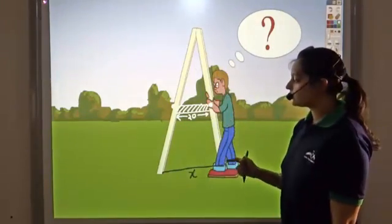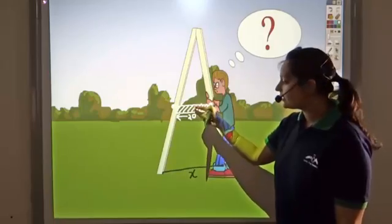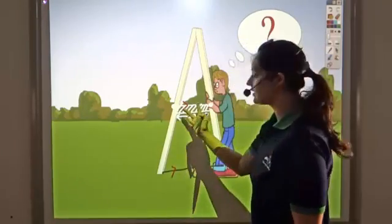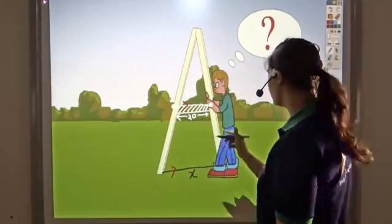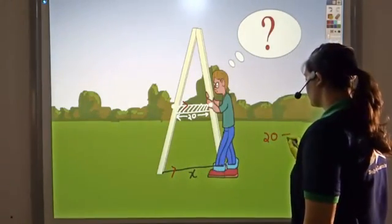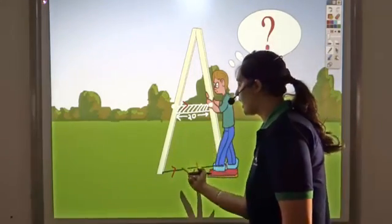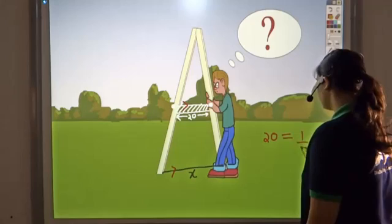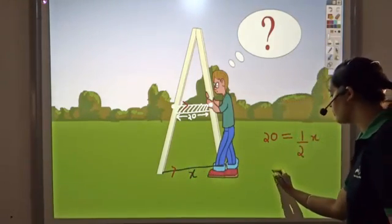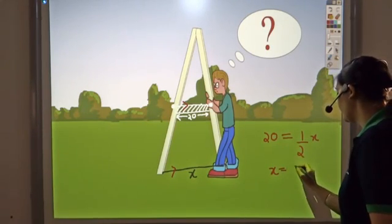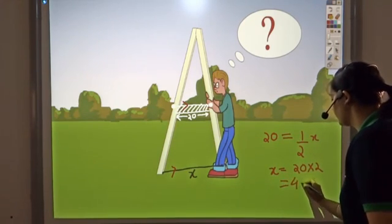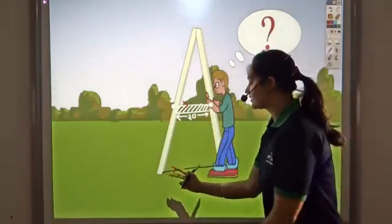If this bar is attached to the midpoints, he knows that it would actually be a mid-segment of this triangle. By the mid-segment theorem, he knows that the mid-segment of a triangle is parallel to the third side and is half of the third side. So 20 should be equal to half of x. Can he find x? He knows that x would be 20 multiplied by 2 — so x turns out to be 40 inches.